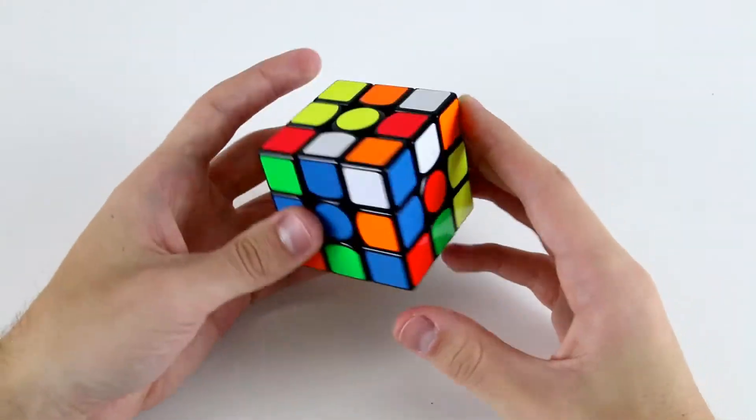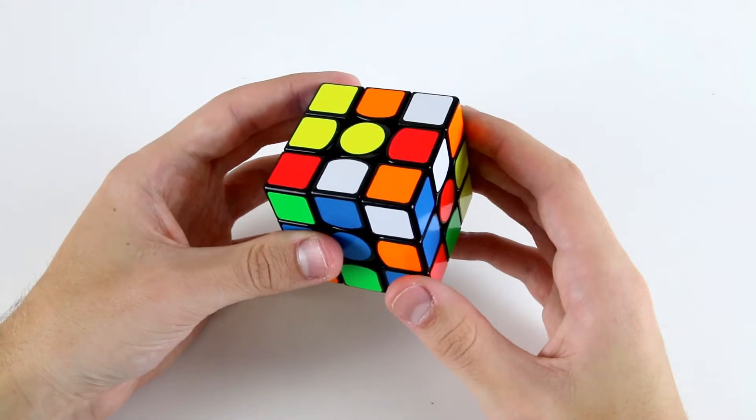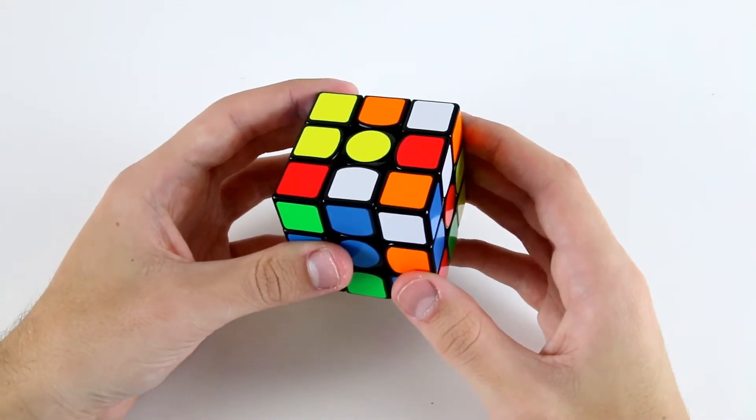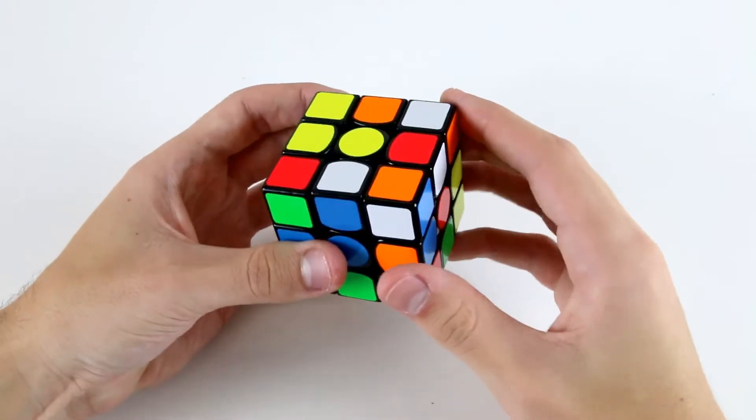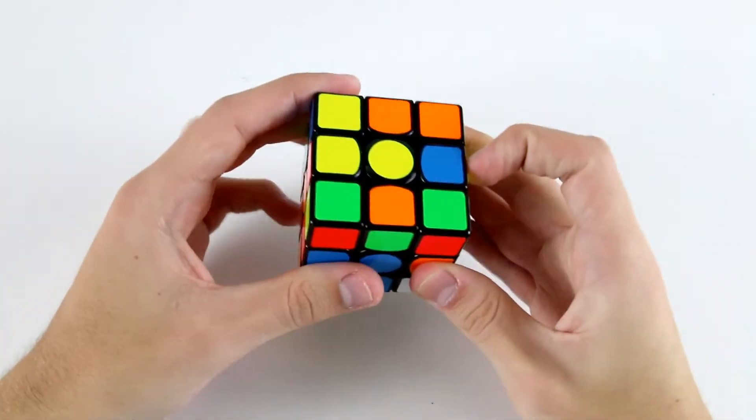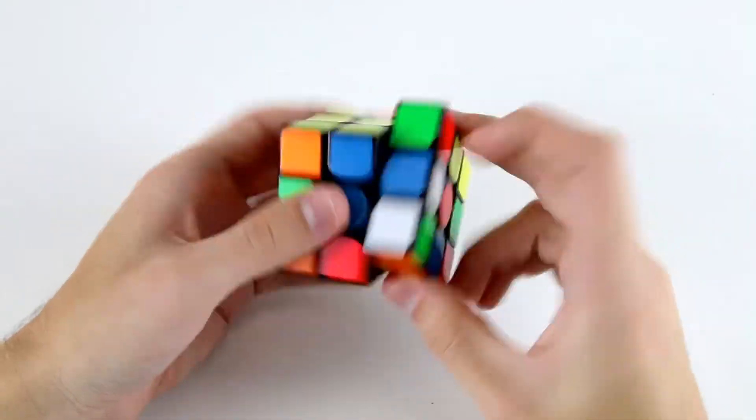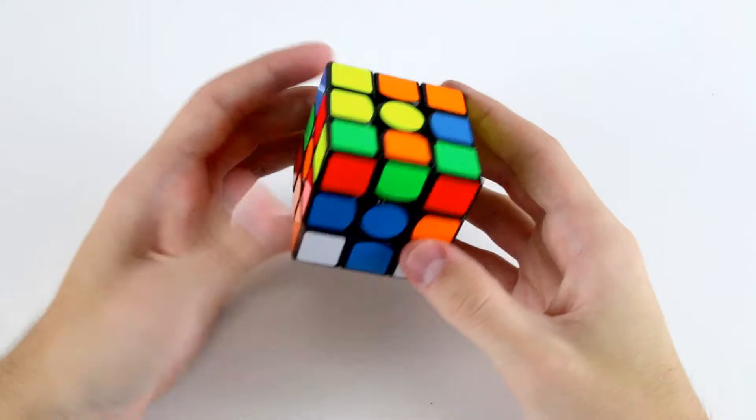I guess the move optimal way to solve the cross from this position would be to do D F U R', which is five moves, but that's a lot slower than doing something like R' F R D R' F R. You can do that really quickly, so that's kind of how I would do that.